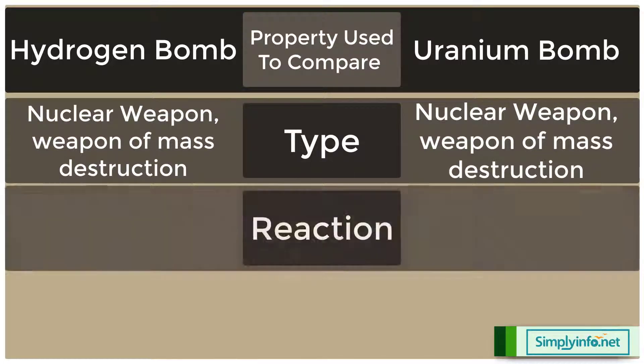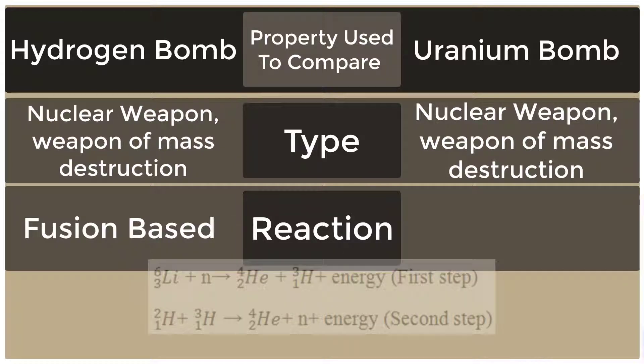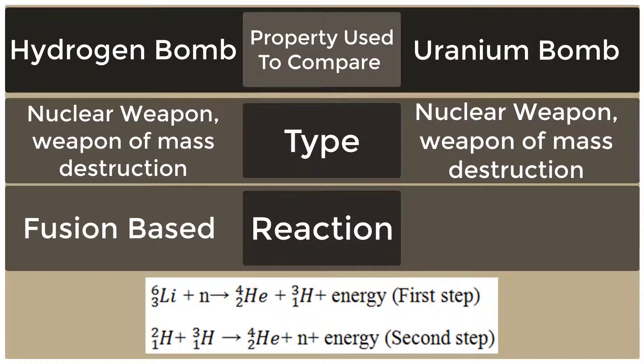Reaction: Hydrogen Bomb is Fusion Based. First step — Lithium plus Neutron reacts to form Helium plus Tritium plus Energy. Second step — Deuterium plus Tritium reacts to form Helium plus Neutron plus Energy.